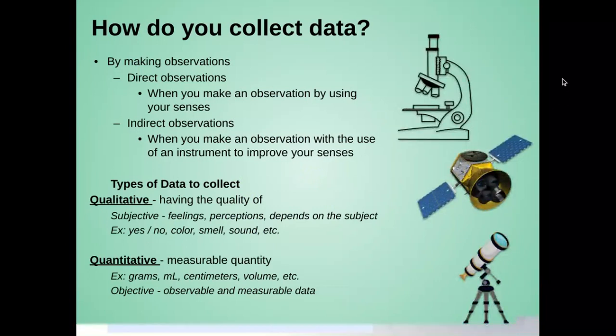How do we collect data by making observations? We can make direct or indirect observations. A direct observation is when you make an observation using your senses. An indirect observation is when you make an observation with the use of an instrument to improve your senses, like a microscope or a telescope.